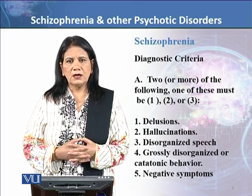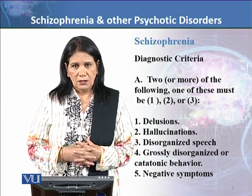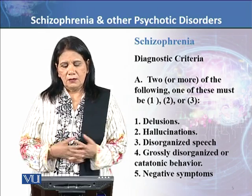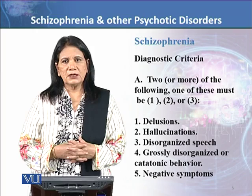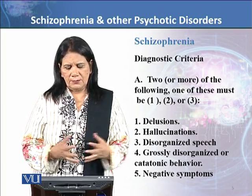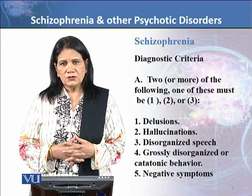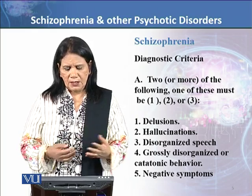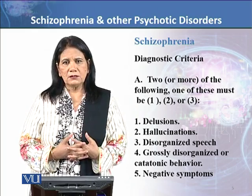Delusions are thoughts in your mind that are not based in reality — you believe in something that is not actually happening. For example, you might believe people are conspiring against you. When you test reality, it turns out not to be true. There are many types of delusions. One example is grandiosity, where you believe you are someone special — perhaps a prime minister, a prophet, or even God. These are perceptions of yourself as being in a special place.